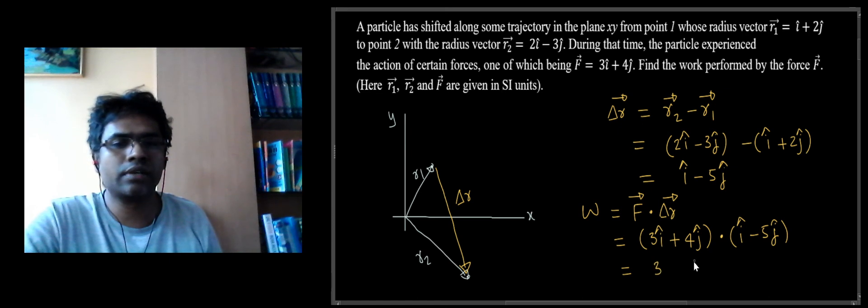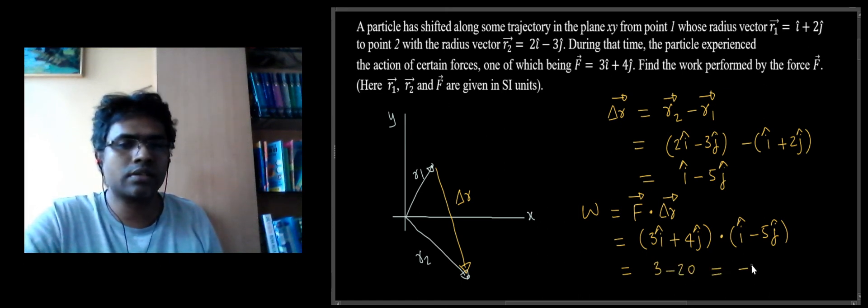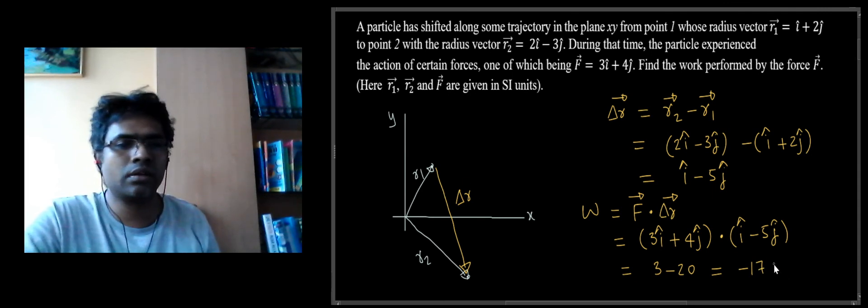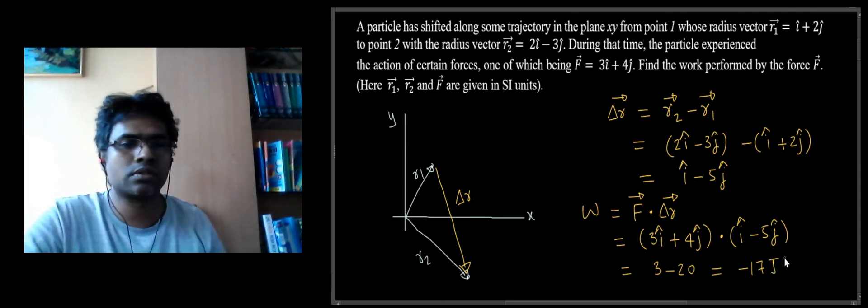So I have 3, 4 into minus 5 is minus 20, so we get minus 17. All the quantities are given in SI units, so the answer will be minus 17 joules.